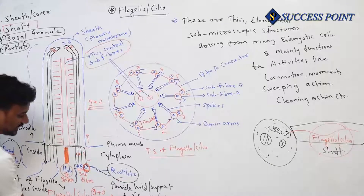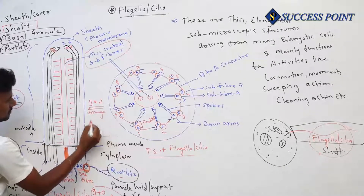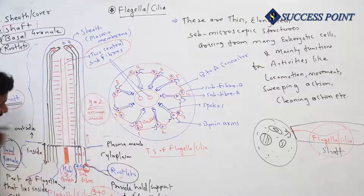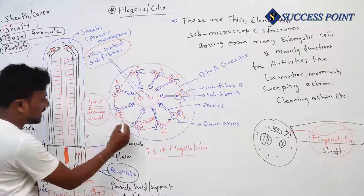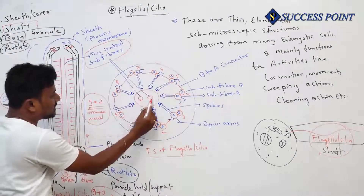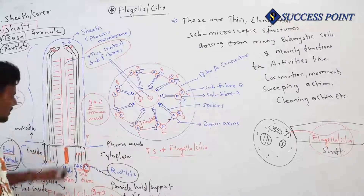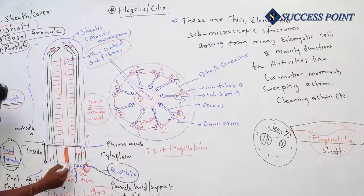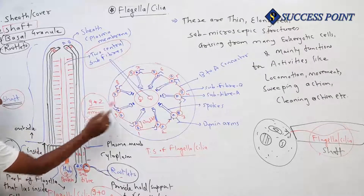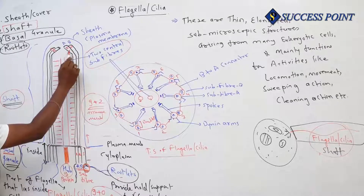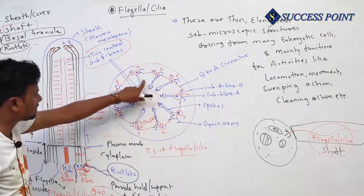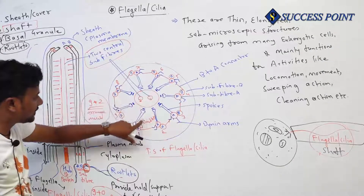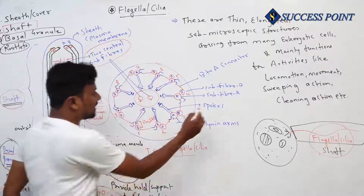To summarize: basal granule arrangement is 9+0, shaft arrangement is 9+2. In 9+2, there are 9 doublets in the periphery and 2 single sub-fibers in the center. In 9+0, there are no central sub-fibers. The central two sub-fibers in the shaft are connected to the peripheral sub-fibers.